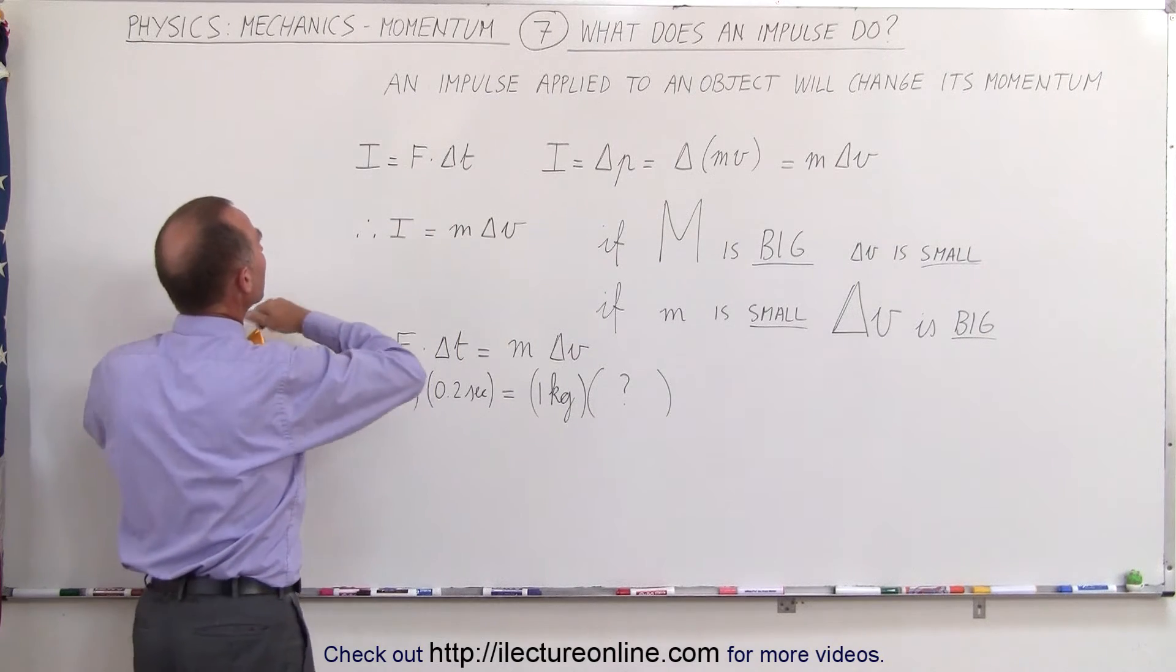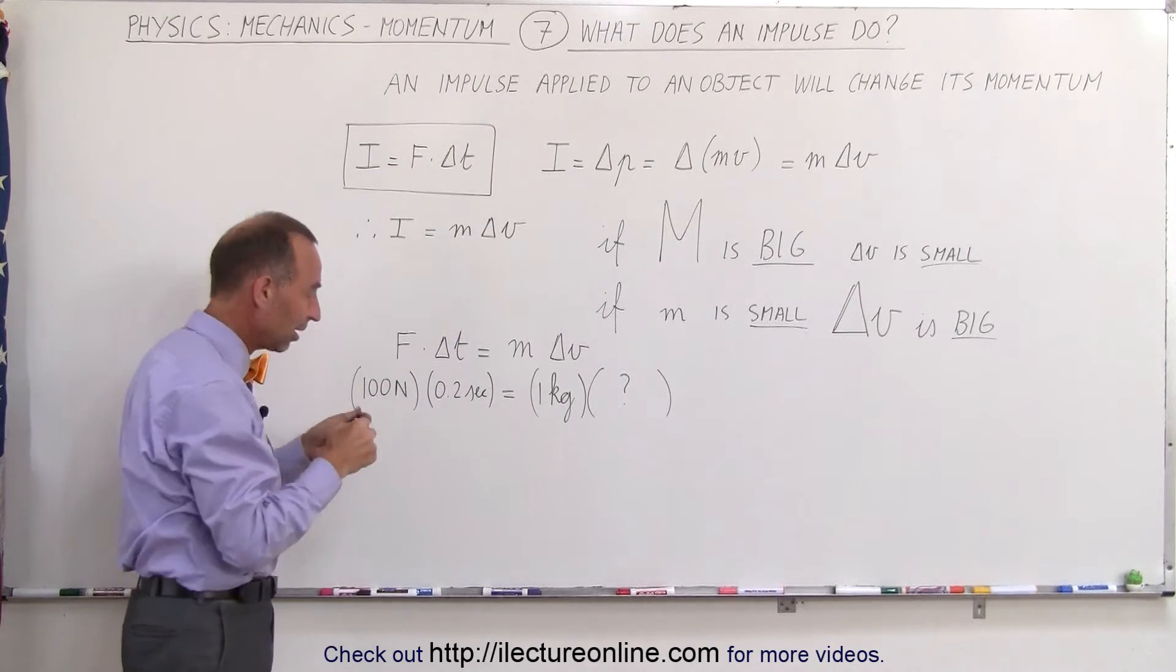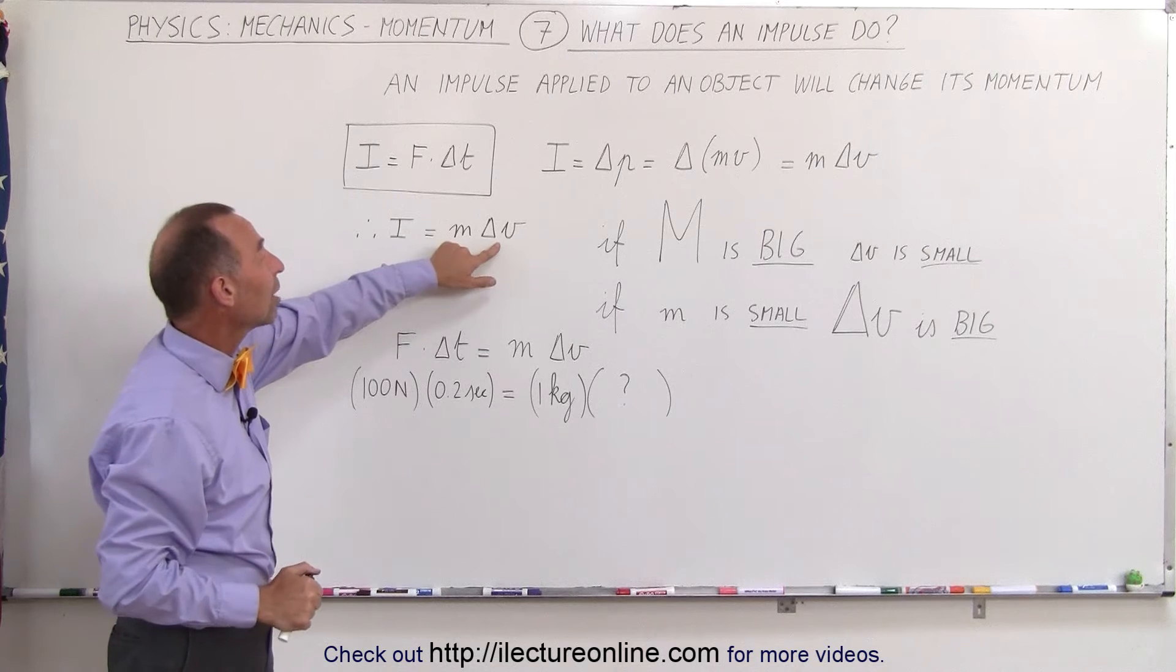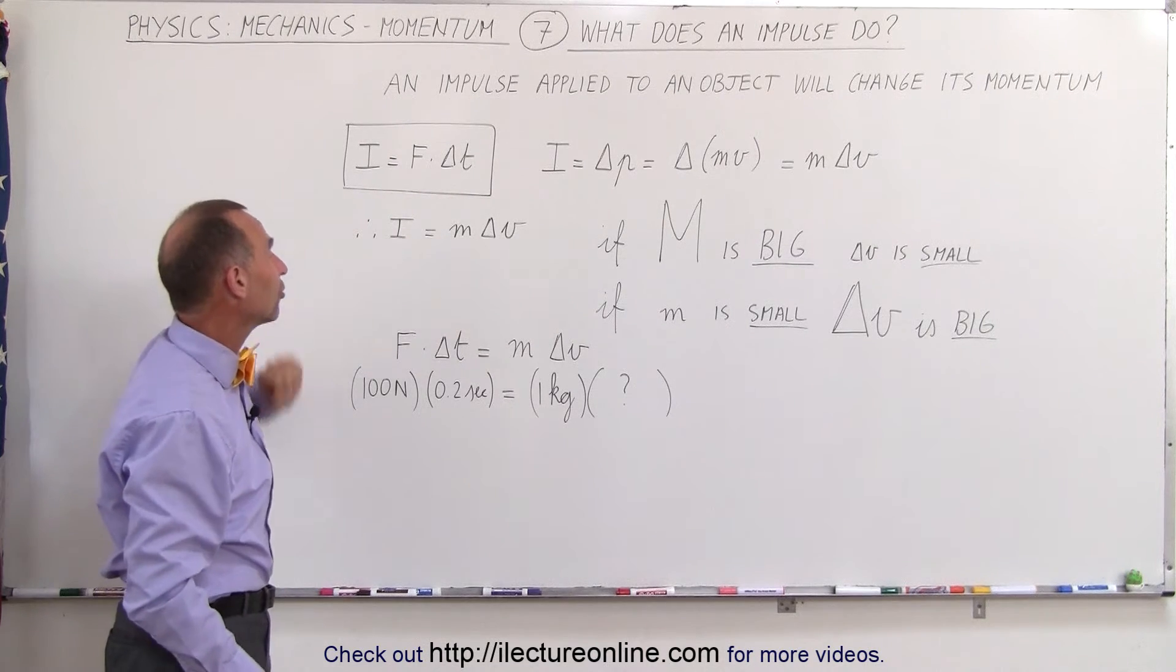The definition of impulse is right here - it's equal to the force times the amount of time the force acts on the object. But the result of that impulse will be that the object will change its velocity depending upon how much mass it has and how large the impulse was.